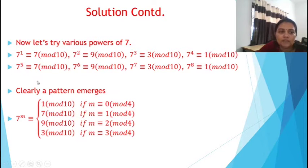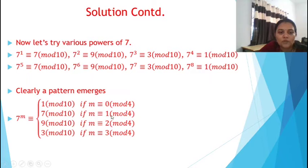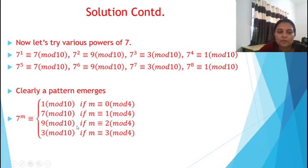Now 7 raised to 5 is again 7 mod 10, 7 raised to 6 is 9 mod 10, 7 raised to 7 is 3 mod 10, and 7 raised to 8 is congruent to 1 mod 10. So clearly a pattern emerges after the 4th power. We can write: 7^m ≡ 1 mod 10 if m ≡ 0 mod 4; 7^m ≡ 7 mod 10 if m ≡ 1 mod 4; 7^m ≡ 9 mod 10 if m ≡ 2 mod 4; and 7^m ≡ 3 mod 10 if m ≡ 3 mod 4.